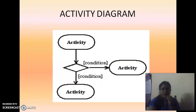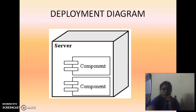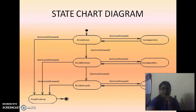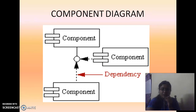The activity diagram represents the collection of activities and conditions within the system. The component diagram shows the various components within the system. The deployment diagram represents how nodes are connected and configured. The class diagram shows the collection of classes. The state chart diagram represents states from an initial state to a final state. Both the activity and state chart diagrams have an initial state and a final state.